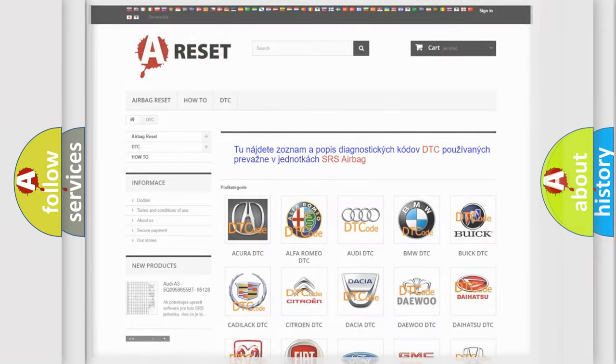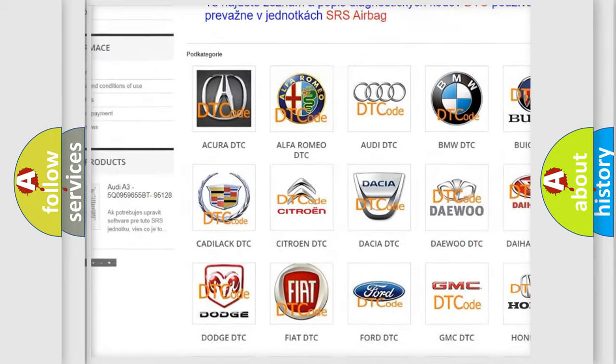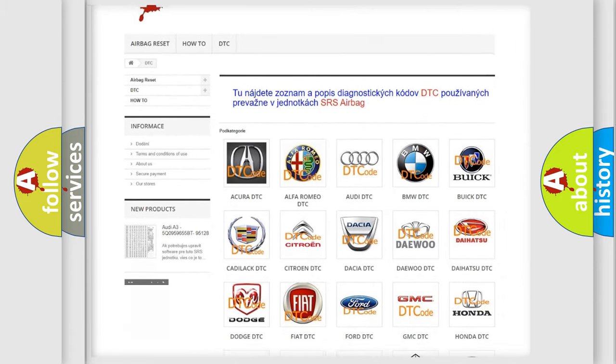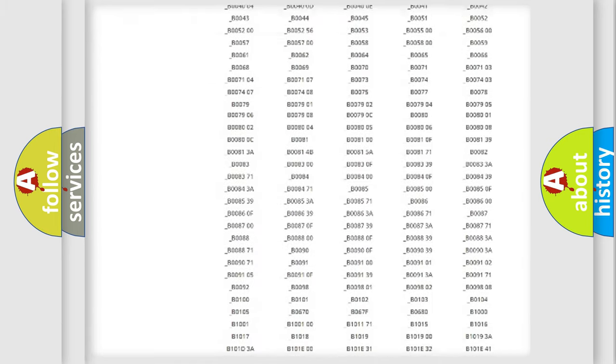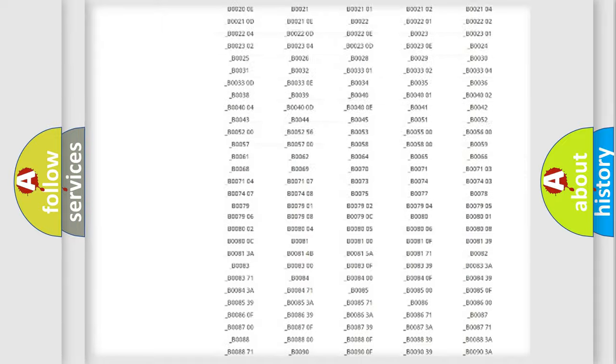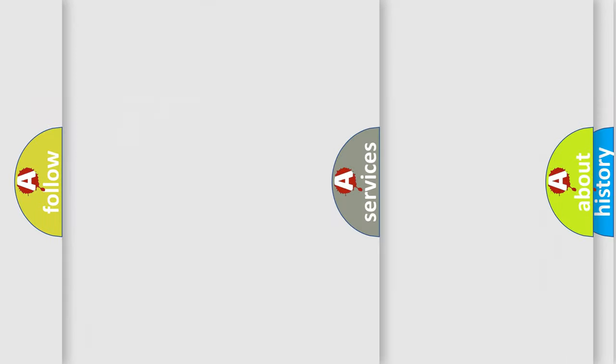Our website airbagreset.sk produces useful videos for you. You do not have to go through the OBD2 protocol anymore to know how to troubleshoot any car breakdown. You will find all the diagnostic codes that can be diagnosed in GMC vehicles, and also many other useful things.